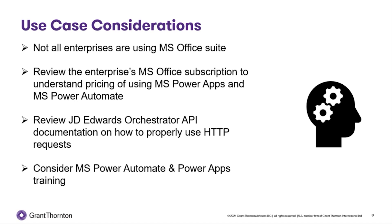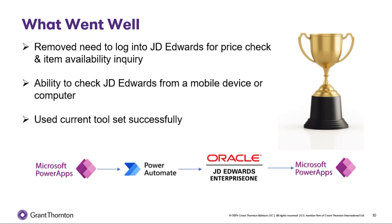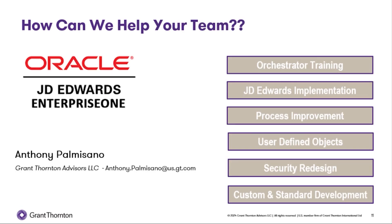Let's take a look at what went well with this use case and the solution we designed. We wanted to remove the need to log into JD Edwards and also be able to check for the price and availability of a specific item at a specific branch plant for a specific customer. We wanted to do that from a mobile device or computer and use the current toolset that we had. Since we had Microsoft Office at our fingertips, we used that tool. We built a Power App that can be used on a mobile device to check the price and availability of an item — I would say that was a success. How can our Grant Thornton team help you? We offer multiple services to assist with your JD Edwards install or implementation, from multiple-day Orchestrator training sessions to optimizations and enhancements of your current install and full-blown JD Edwards implementations. Feel free to reach out via the email below. Thank you for your time today.